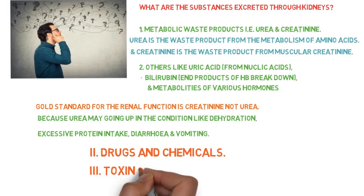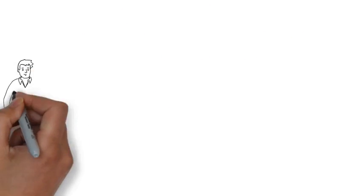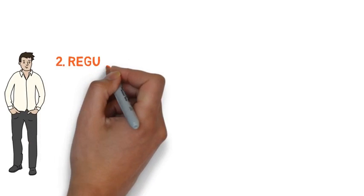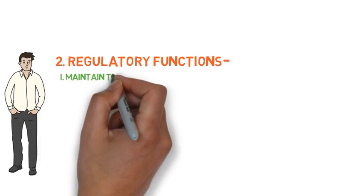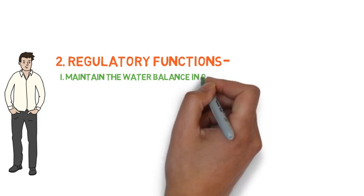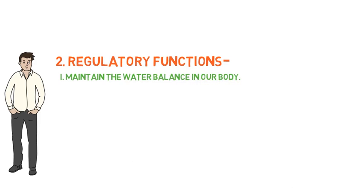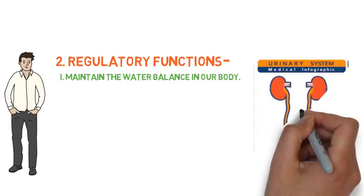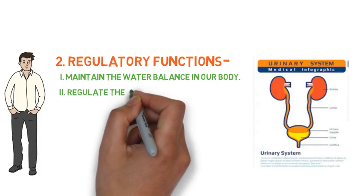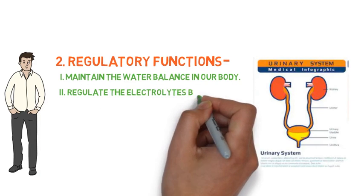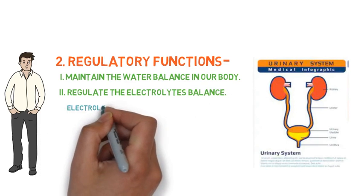The next function of the kidney is regulatory function. Number one is maintaining the water balance in our body — if the intake of water is in excess, then the amount of excretion will be increased, and if intake is less, then the excretion will be decreased. Number two is regulating electrolyte balance.